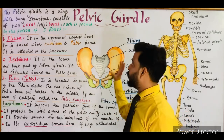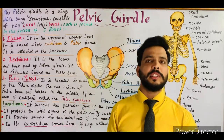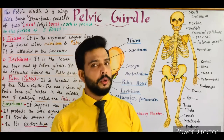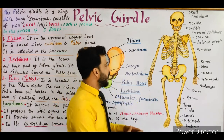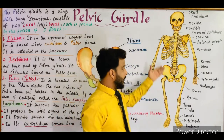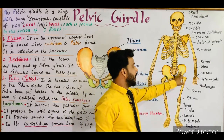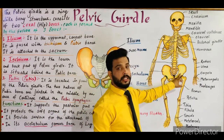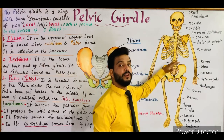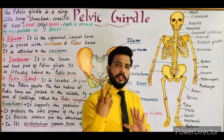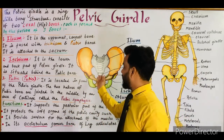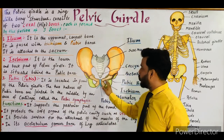First of all, what is the situation of the pelvic girdle — where is it situated? The pelvic girdle is situated in the lower trunk region of the body. As you can see in this diagram, the pelvic girdle is situated in the trunk region and it forms the posterior part of our trunk.